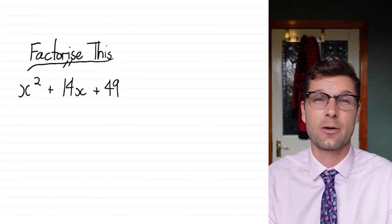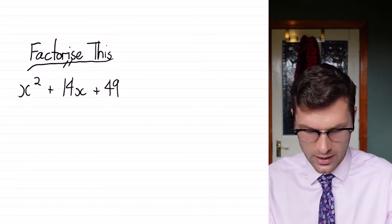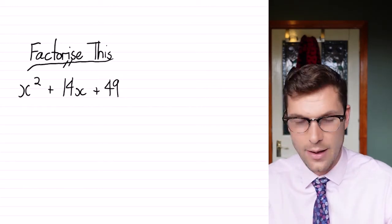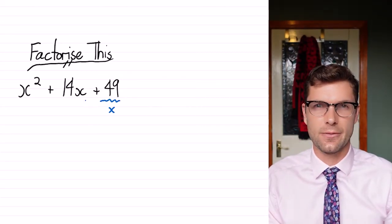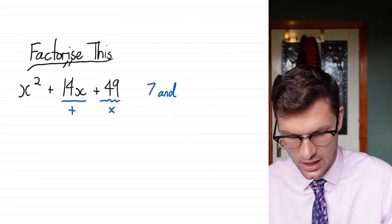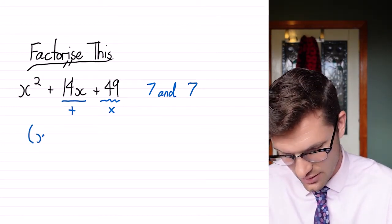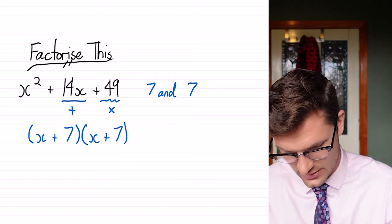We also know that if we expand something with a rule, we can go the other way. So this one, we've got x squared plus 14x plus 49. We know that we're looking for a number that multiplies to the last term and pluses to get the middle term. We know this is 7 and 7. So we'll straight away be able to get to the answer x plus 7, x plus 7, or x plus 7 squared.